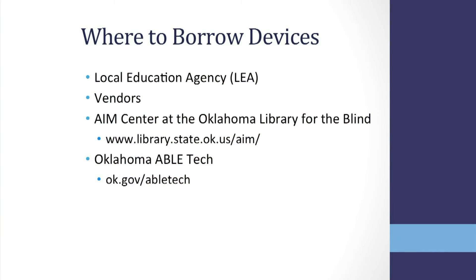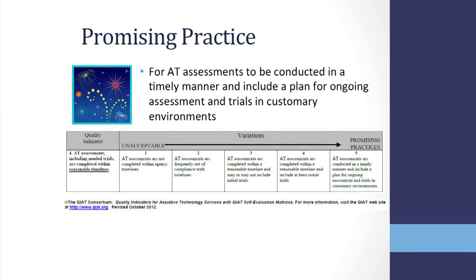In Oklahoma, there are great options for completing device trials. The local education agency or school may have AT in their inventory. Schools may also contact specific vendors for items. The AEM Center at the Oklahoma Library for the Blind and Oklahoma ABLE Tech also have devices for trial purposes. Contact the AEM Center at www.library.state.ok.us/aem and Oklahoma ABLE Tech at ok.gov/abletech. Promising practice is for AT assessments to be conducted in a timely manner and include a plan for ongoing assessment and trials in customary environments.